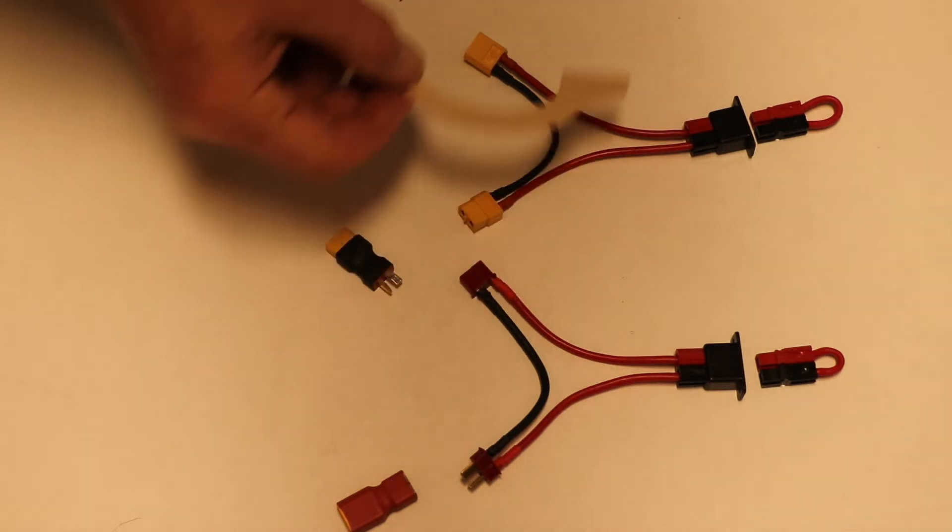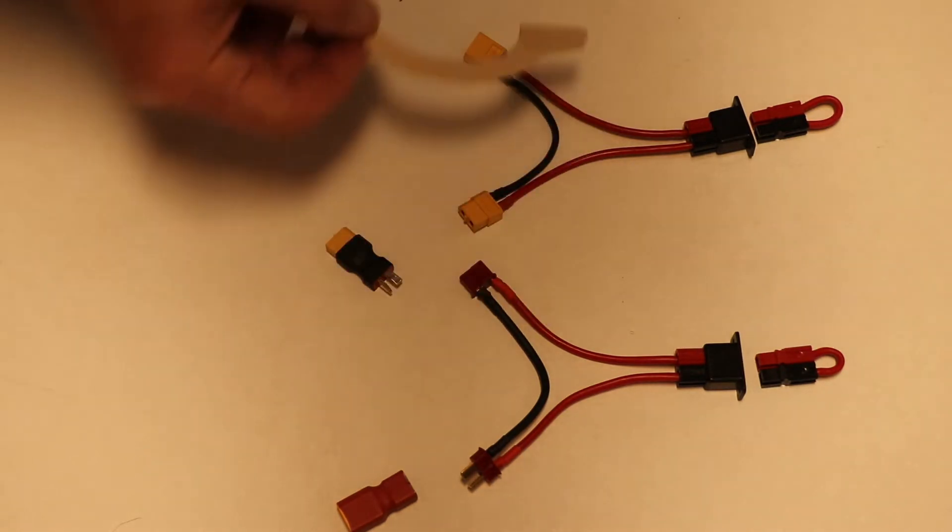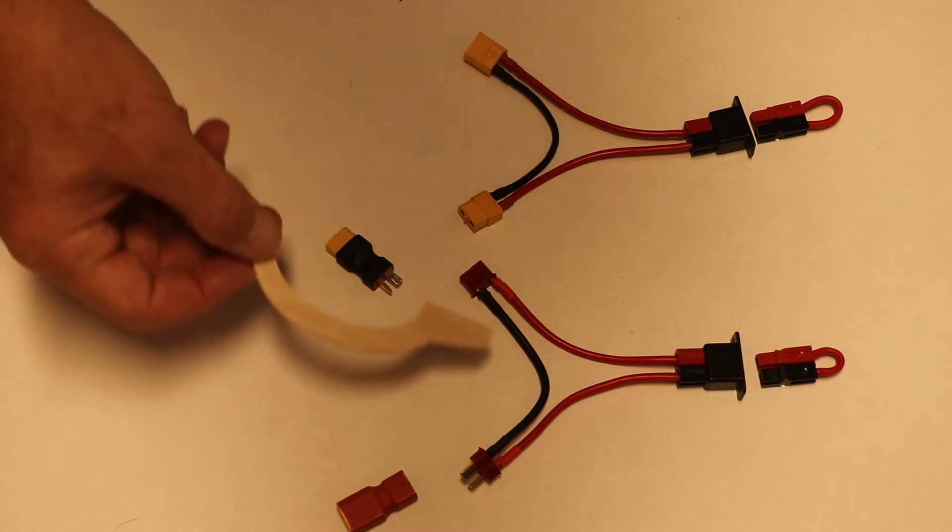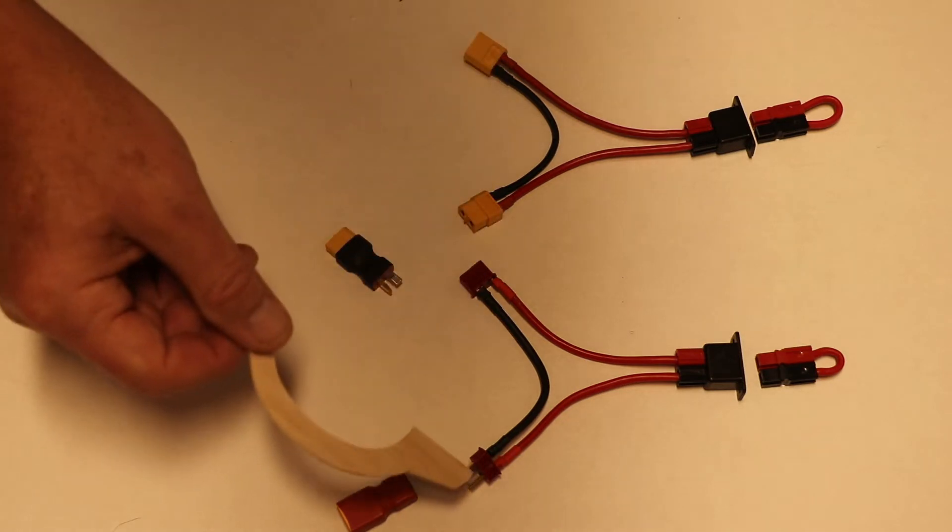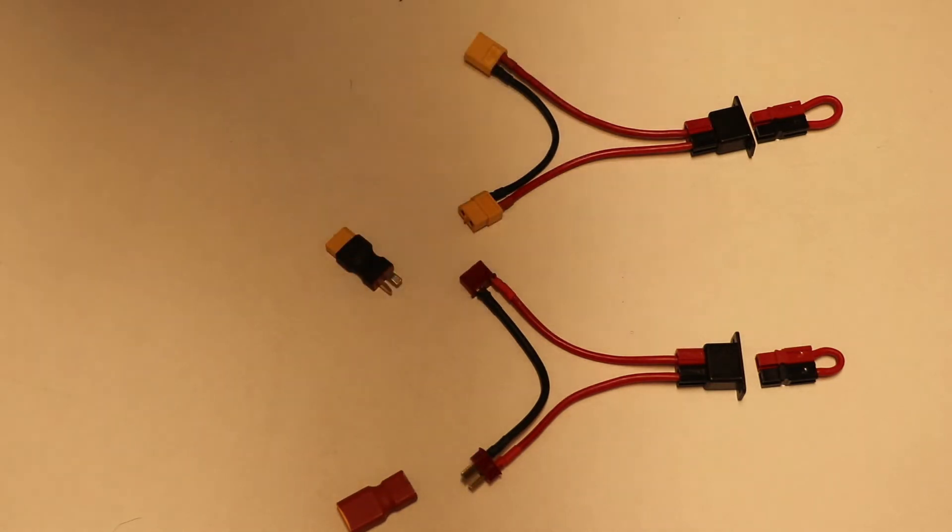These are two essentially identical shorting plugs that I got from Dave's RC Electronics. This one's got Dean's, this one's got XT60. Most of my models fly with the XT60, but I do have a few occasions where I have the Dean's.